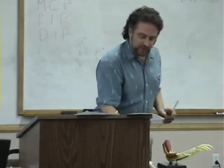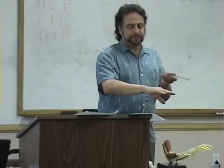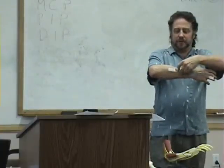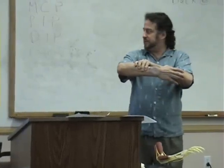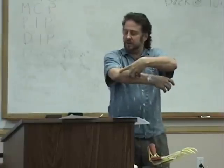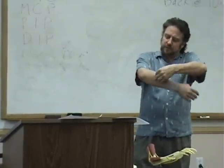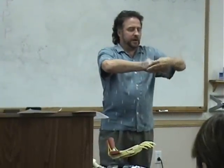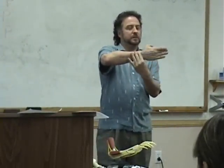For radial and ulnar deviations, the hand is over the edge of the desk but turned so it's palm-down. The fulcrum is the mid part of the dorsal surface of the wrist. The fixed arm goes along the long axis of the forearm, aiming toward the olecranon or lateral epicondyle. The mobile arm aligns along the middle of the third metacarpal. Pretty straightforward.